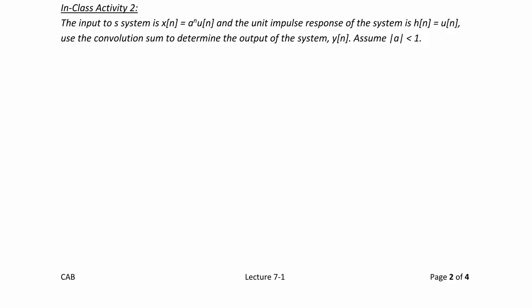In-class Activity 2: The input to a system is x of n is equal to a to the n, u of n. And the unit impulse response of the system is h of n equals u of n. Use the convolution sum to determine the output of the system y of n, assuming that the magnitude of a is less than 1. So, y of n is equal to x of n convolved with h of n, or y of n is equal to the summation from k equal negative infinity to infinity of x of k, h of n minus k.